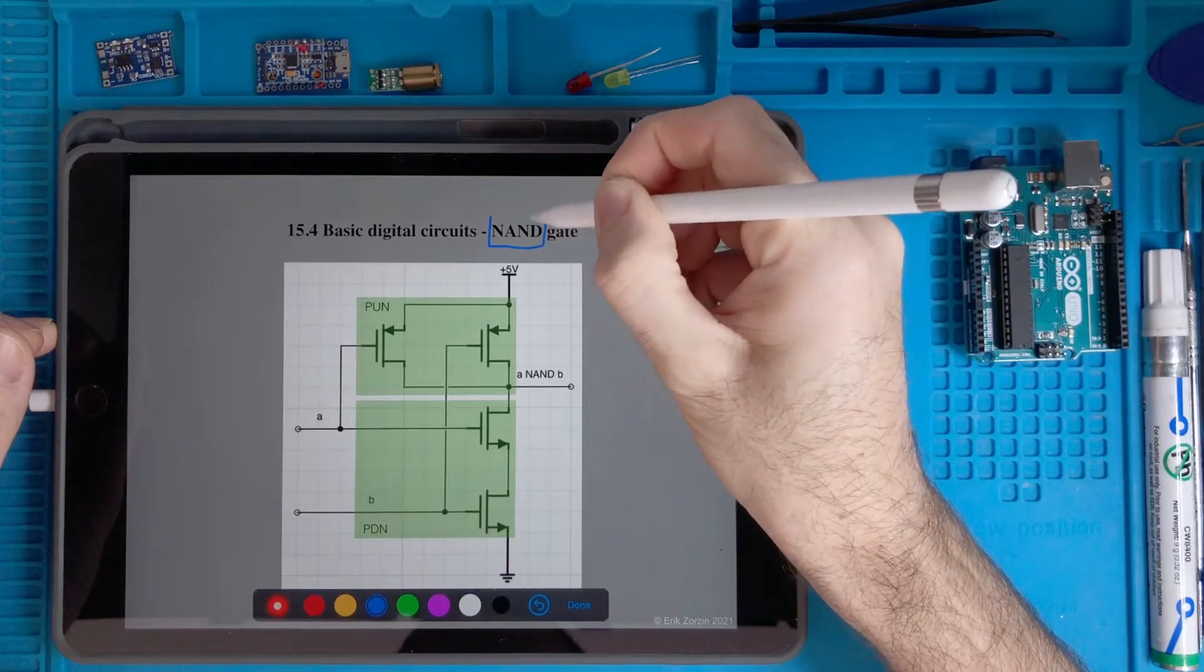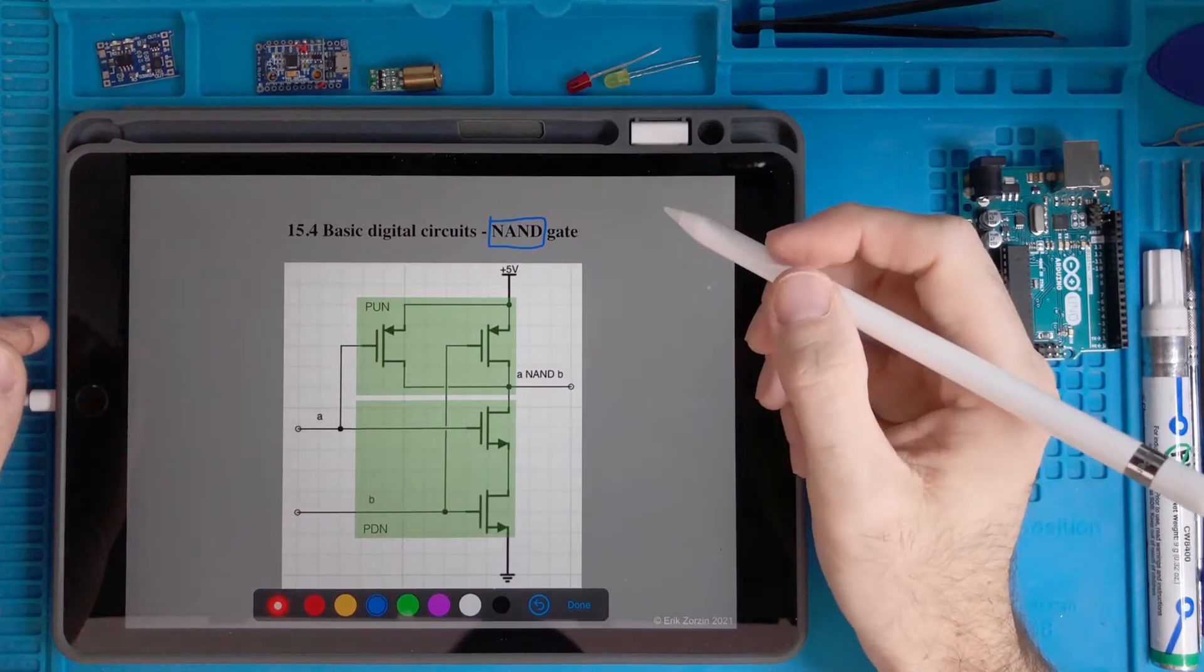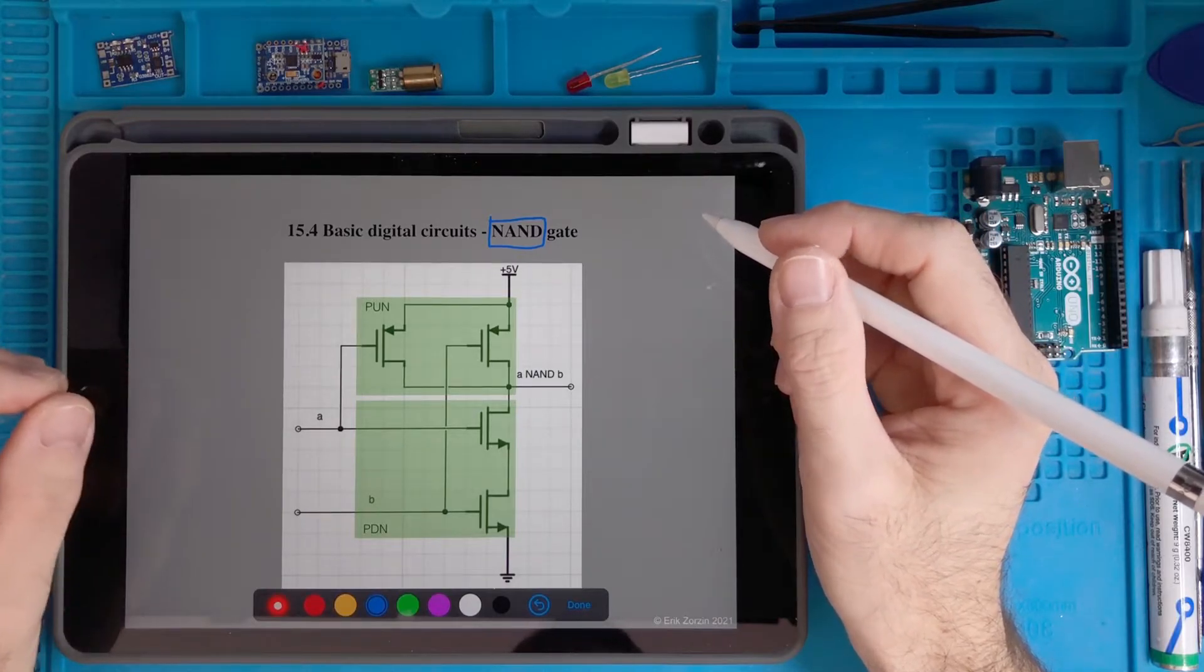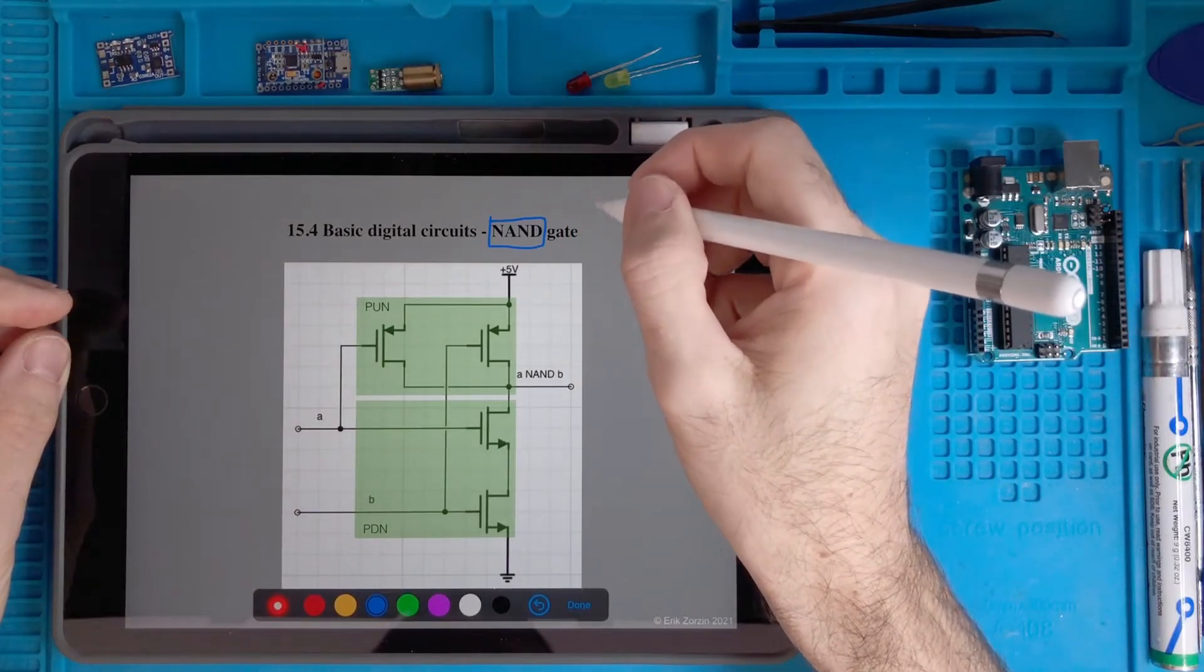NAND - it's not AND, it's NAND. It means NOT AND. So what is this thing?